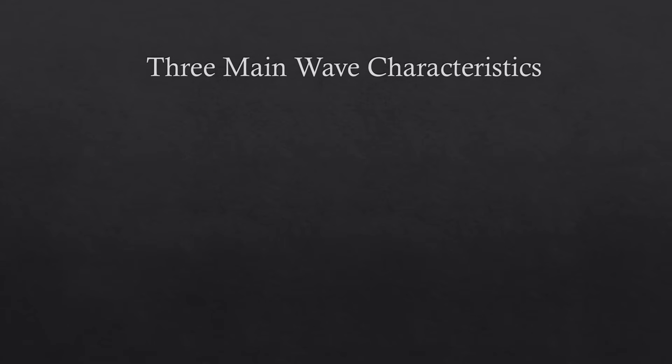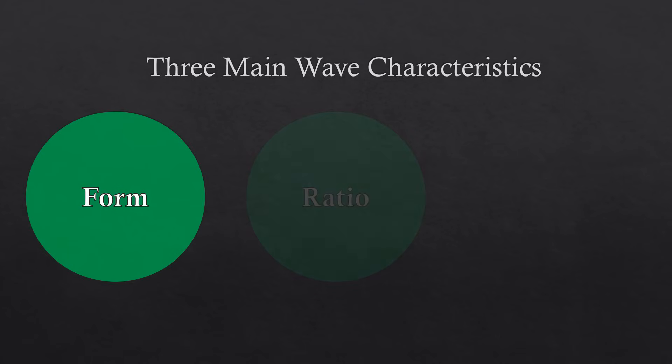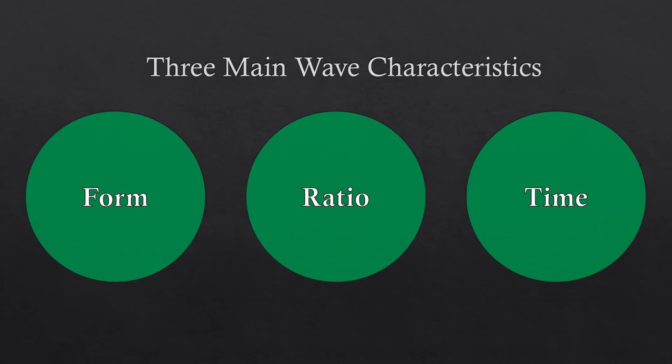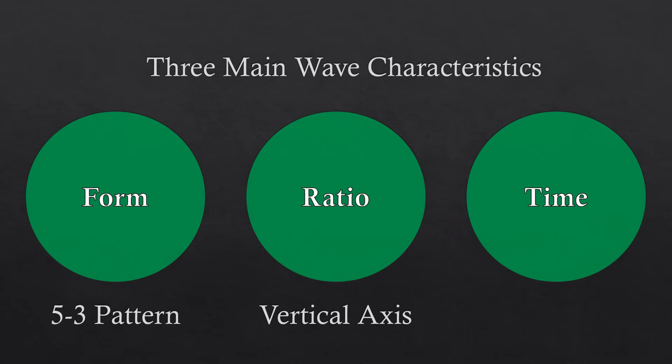There are three elements that characterize Elliott waves: form, ratio, and time. The waveform is the fundamental 5-3 pattern, and it is the most important element. The ratio element refers to the vertical ratio between waves, which is often used in combination with Fibonacci tools, as distinct waves will respect specific Fibonacci ratios. The third element is time, the horizontal ratio between different waves, which also respects Fibonacci ratios. Out of these three elements, form takes precedence — the 5-3 pattern is more important than the vertical and horizontal ratios.